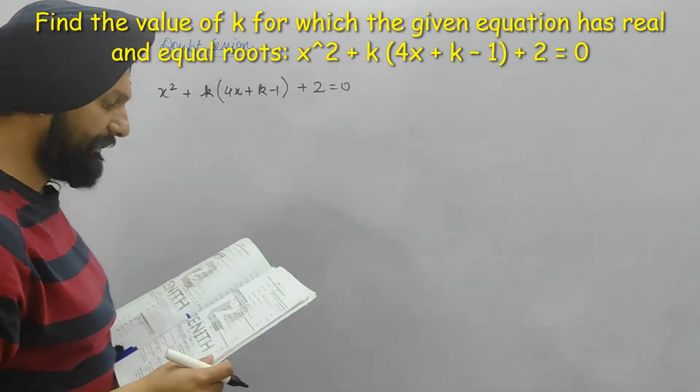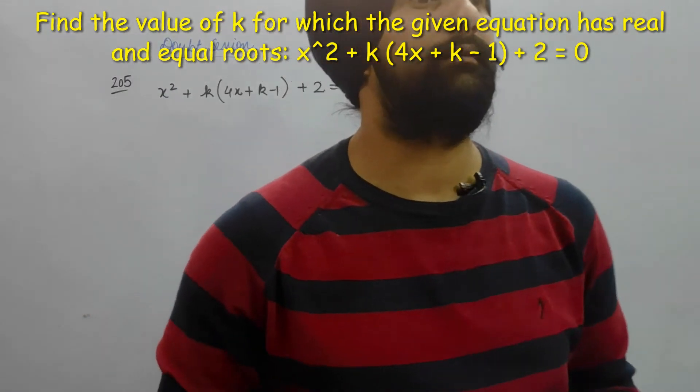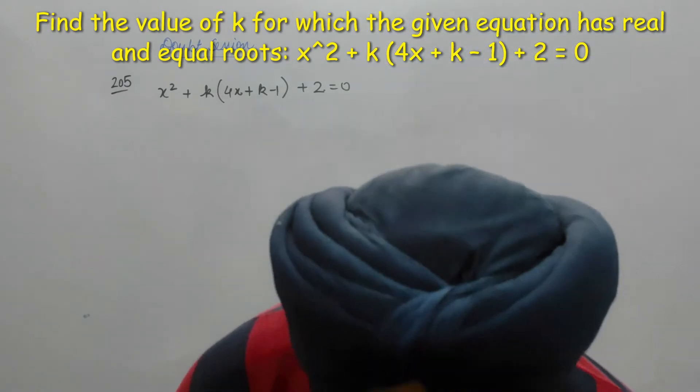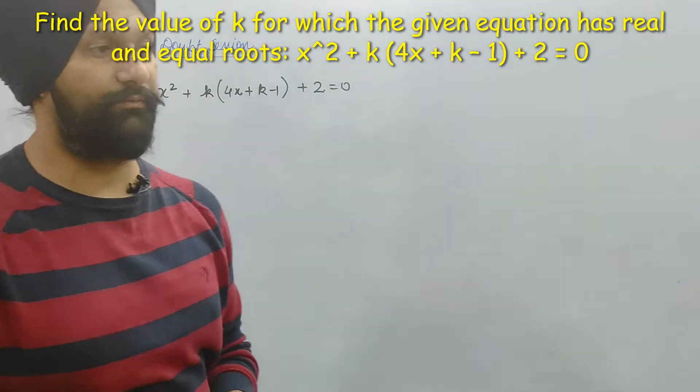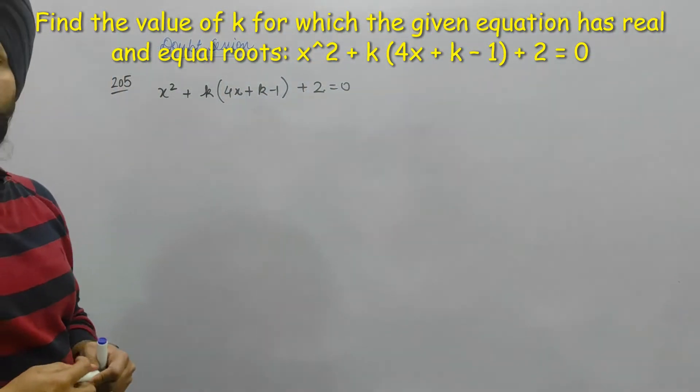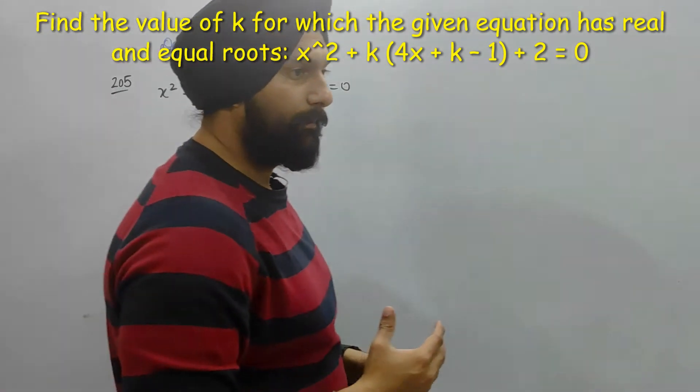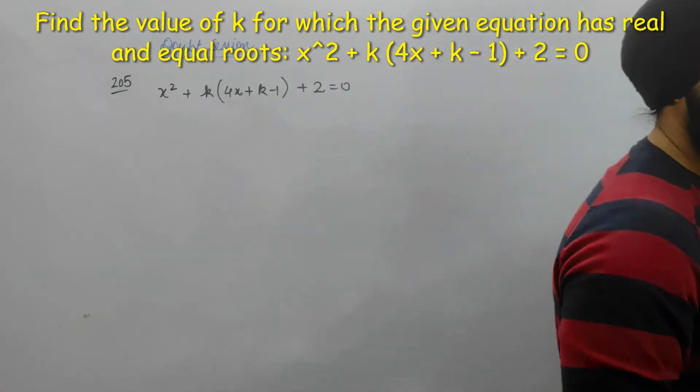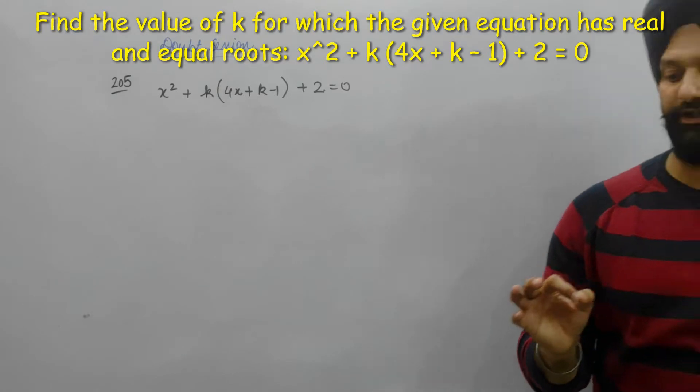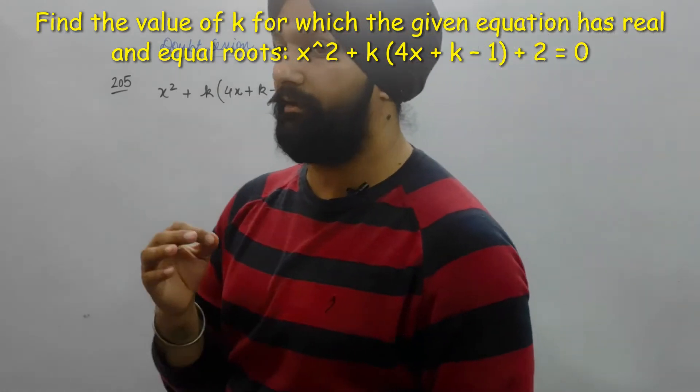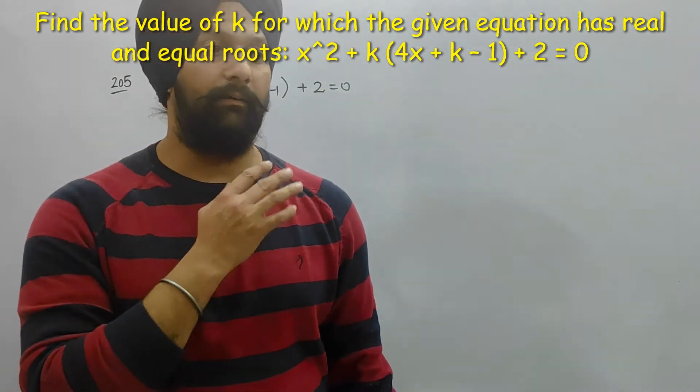And roots are real, roots are real and equal. So it has clear cut mention that our roots are real and equal. So how do we convert the question to the basic quadratic equation, which is x square plus bx plus c? We are going to convert.